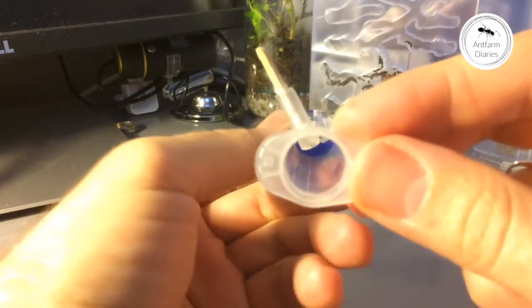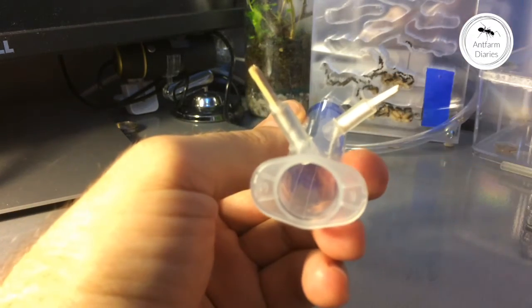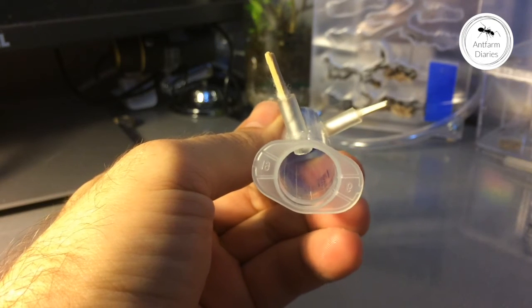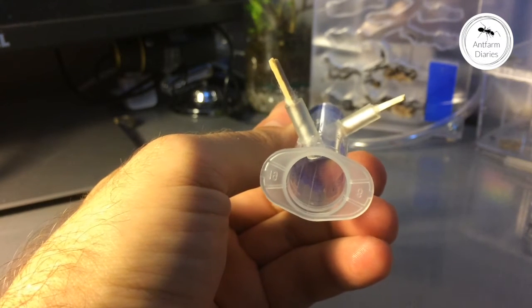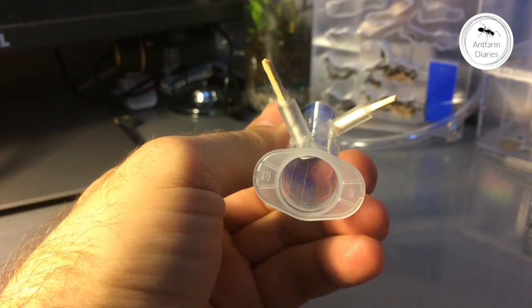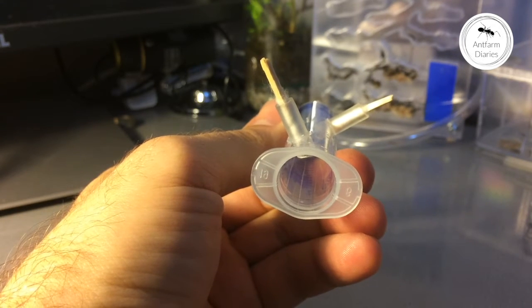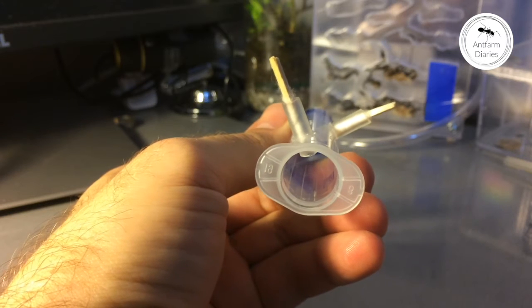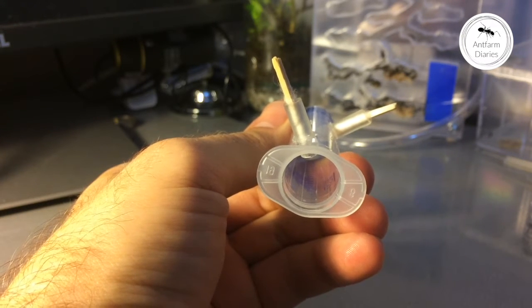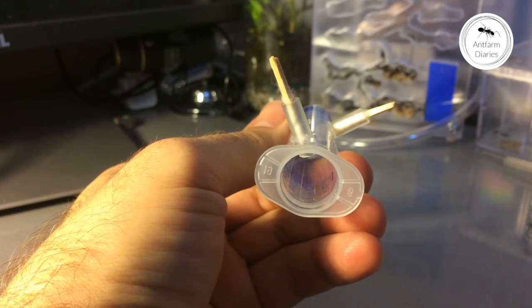And if you take a look here you will see scratches inside the syringe. This is for the queen, so the surface inside of the syringe is very smooth and by scratching it from inside I'm allowing the queen to move more comfortably.